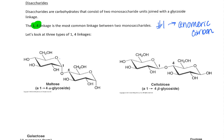We get the number four by starting to count from the anomeric carbon of the second monosaccharide. Looking at the first monosaccharide, where your oxygen is in the ring, that carbon is your anomeric carbon — we're forming a bond at that first position. In the second monosaccharide, the anomeric carbon is one, making the next two, then three, then four. At that fourth position there was an OH group, and that OH is now connected to the first position of the other monosaccharide.